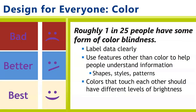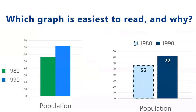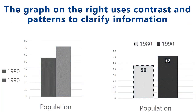When choosing colors, design for everybody. Roughly 1 in 25 people have some form of color blindness, so it's very likely that many people who view your poster won't be able to tell certain colors apart. To make everything work well, you can label all your data very clearly. You can use features in addition to color to help people understand information, including shapes, styles, and patterns. Always make sure that colors that touch each other have different levels of brightness. The graph on the right also uses contrast and patterns to clarify information, so it's a little easier to interpret quickly.